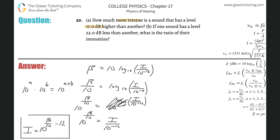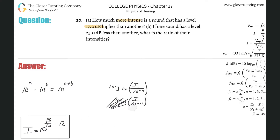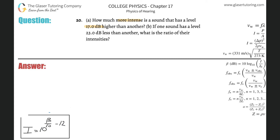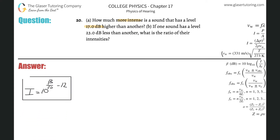Now, it says 'how much more intense' — I'm going to interpret that as how many times more intense. You could actually memorize this formula — it's not a bad idea. This formula already solves for intensity once you're given the decibel value, and the other formula, beta equals 10 times log base 10 of I over I₀, is already solved for decibel value. So I would know both of them. Now I'm going to find the ratio.